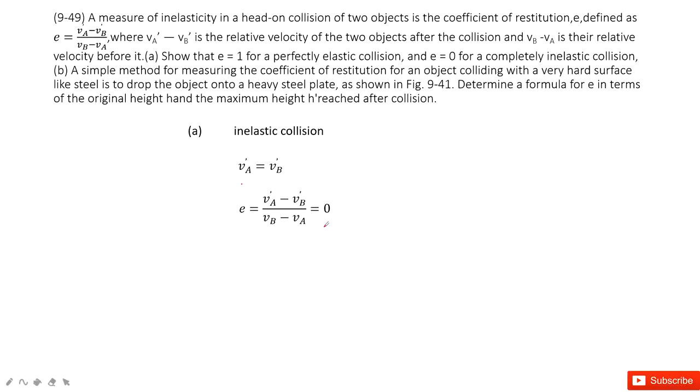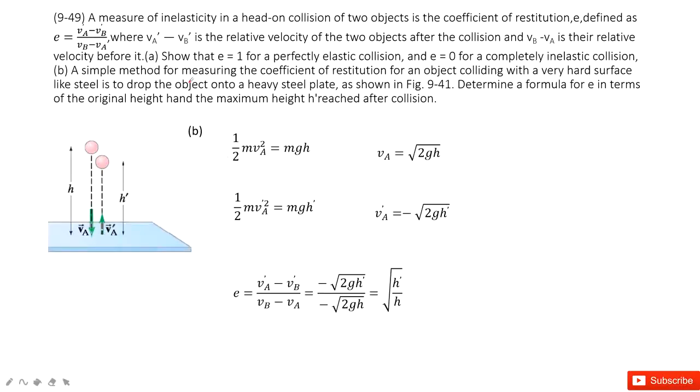The next one asks us to measure it. If we have an object that falls down and hits the hard surface of the ground and then bounces back. So in these two cases, we need to find v_A and v_A'. How can we do that?